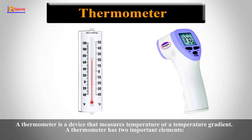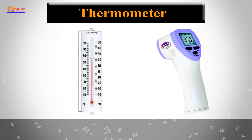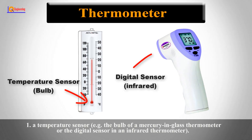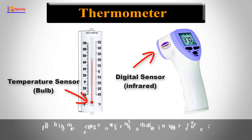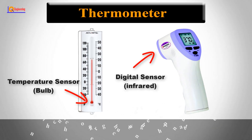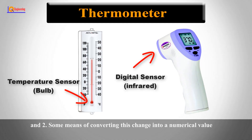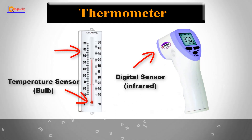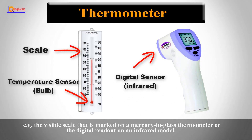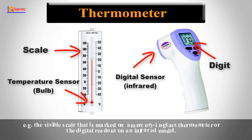A thermometer is a device that measures temperature or a temperature gradient. A thermometer has two important elements: one, a temperature sensor in which some change occurs with a change in temperature, and two, some means of converting this change into a numerical value — the visible scale marked on a mercury-in-glass thermometer or the digital readout on an infrared model.